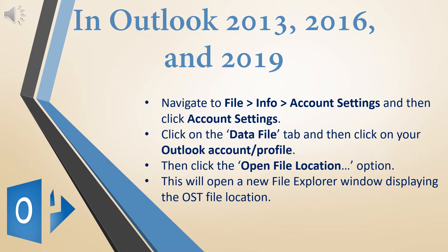In Outlook 2013, 2016, and 2019, navigate to File > Info > Account Settings, then click Account Settings. Click on the Data File tab and select your Outlook account or profile, then click the Open File Location option. This will open a new File Explorer window displaying the OST file location.